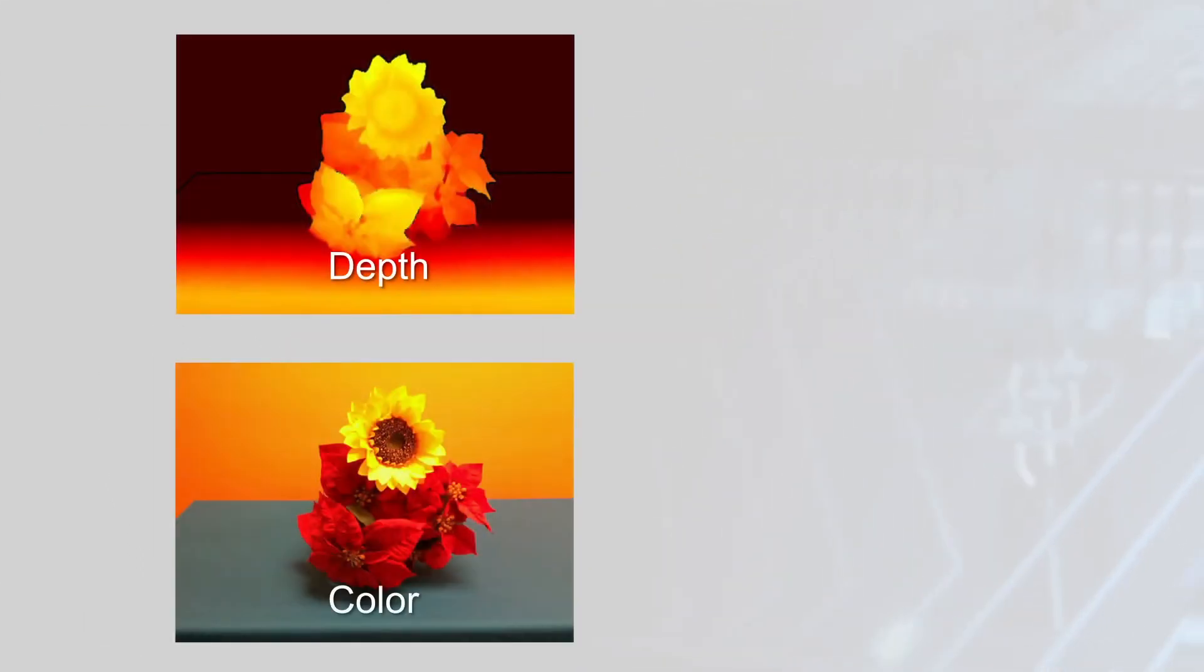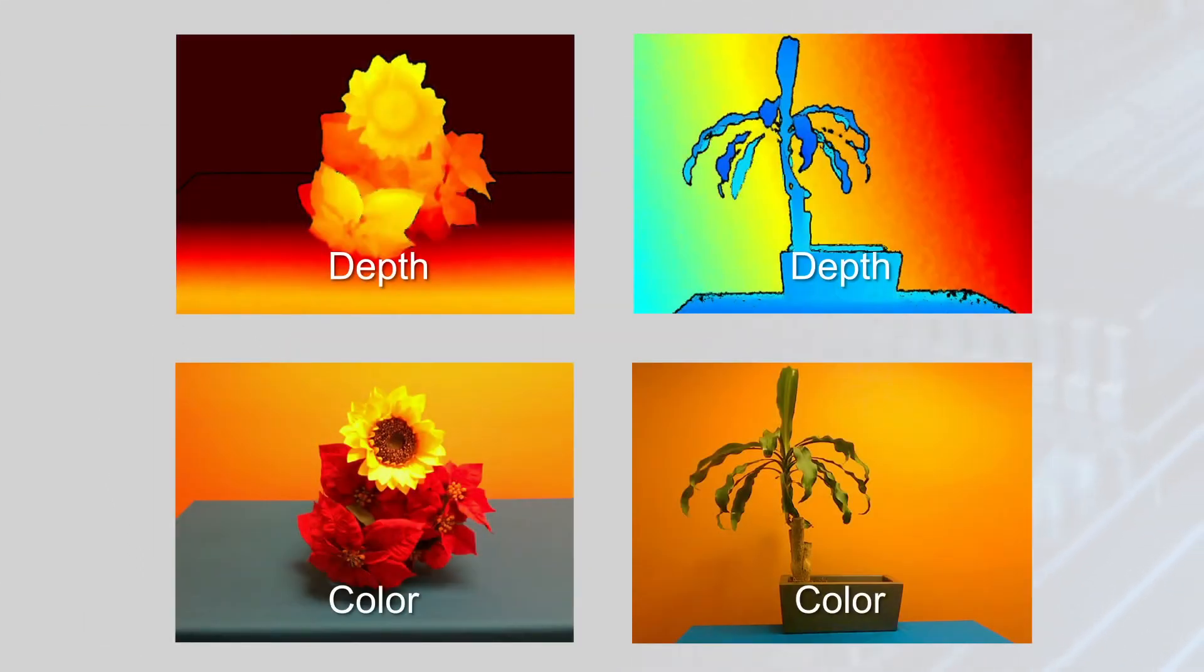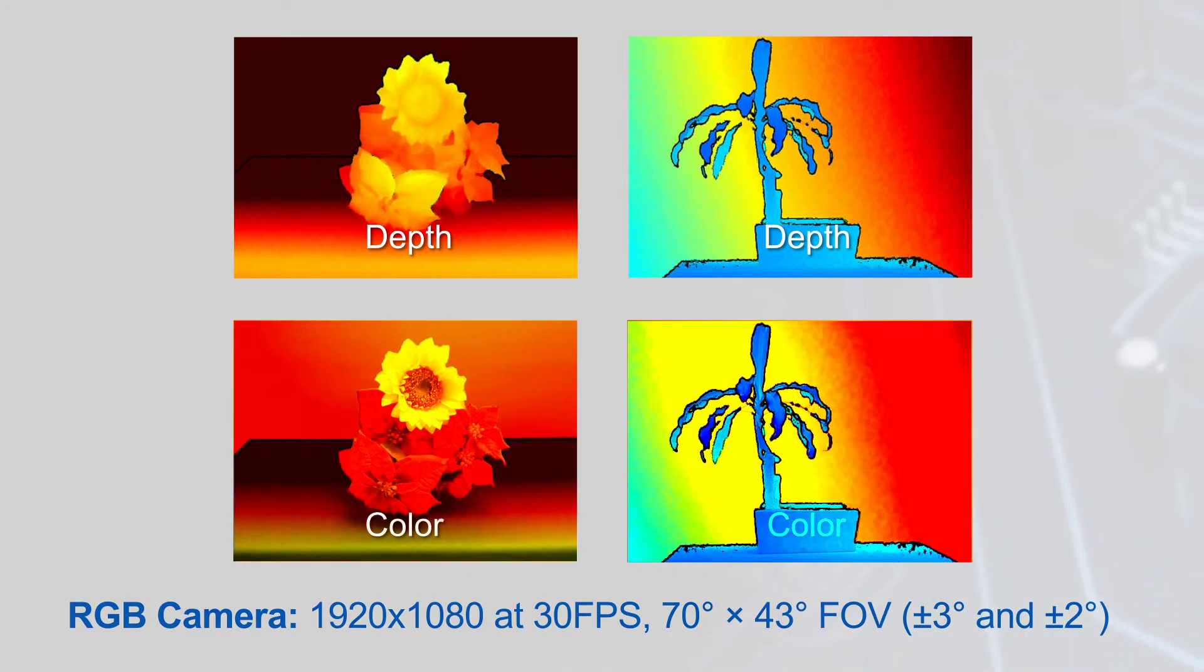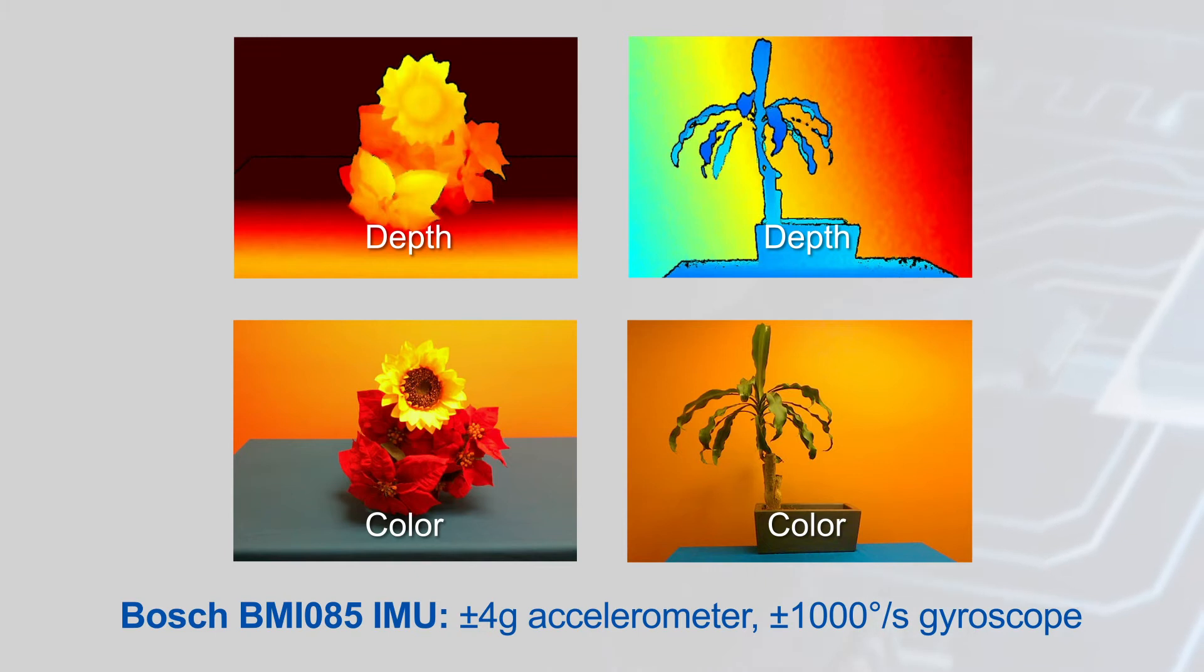The L515 integrates additional sensors to enable a wide range of use cases and simplify system integration. A full HD 30 frames per second RGB camera provides a video feed that can have depth data overlaid, and a Bosch IMU provides motion tracking capabilities.